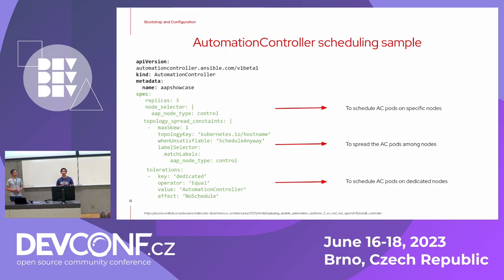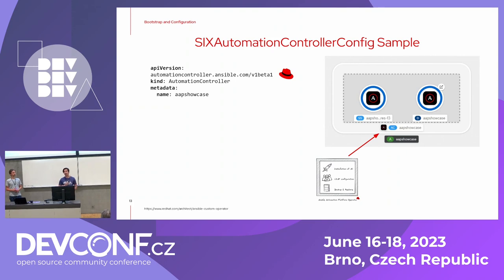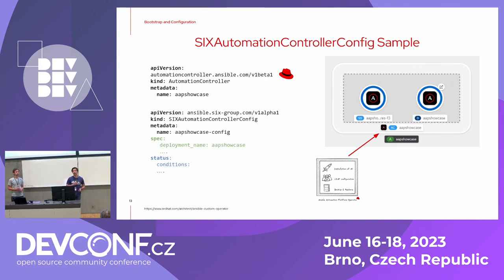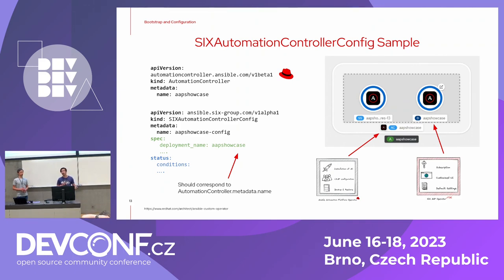You can find more details on a blog post linked in the references, which covers LDAP configuration at bootstrap and how to integrate CA bundles for external services. One user will create an automation controller YAML file, which installs the automation controller within their namespace. The second YAML file creates our custom Ansible operator resource, which automatically injects the license. The mapping is done by taking the name of the automation controller so it knows which one to configure, and then it will inject everything within 10 minutes.